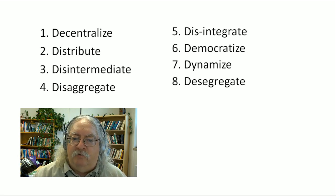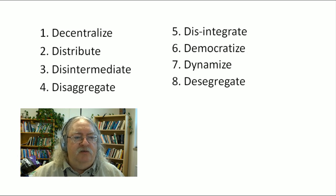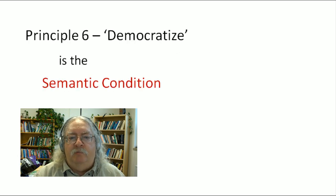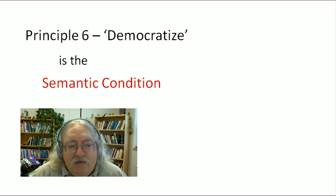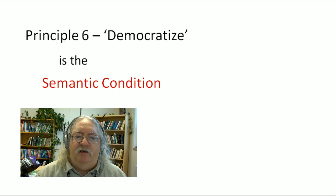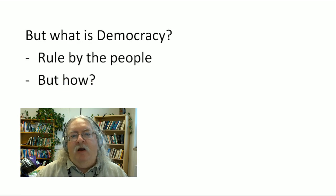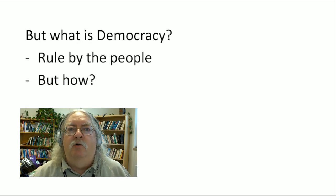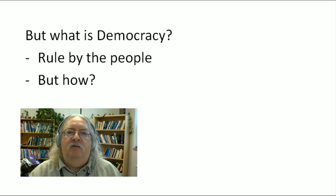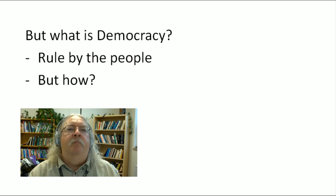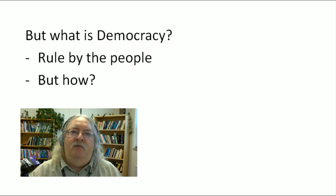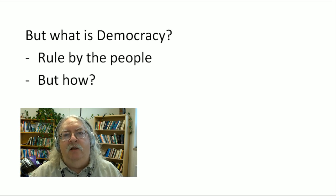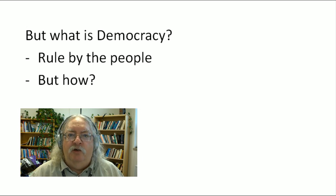It's principle number six. Principle number six talks about what I call the semantic principle, or the semantic condition. Principle six is democratize. But what is democracy? Well, democracy is ruled by the people, but there are many ways we can rule ourselves — in communist collectives, in capitalist free market survival of the fittest, or any of a number of other ways of organizing society. When I talk about the semantic condition, what I'm talking about is a mechanism for organization based on network principles that confers what I believe are the greatest advantages in terms of meaning, truth, and value.